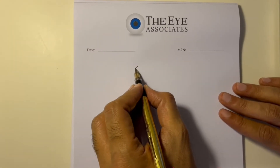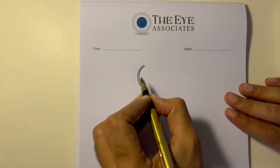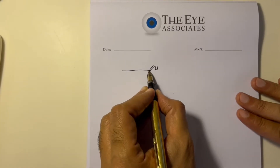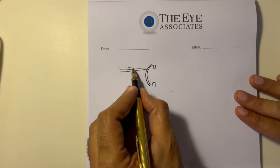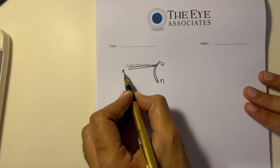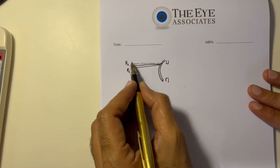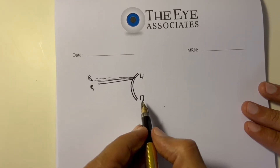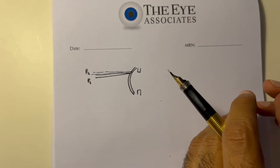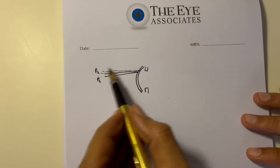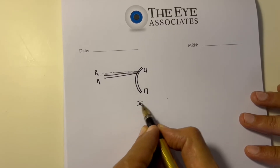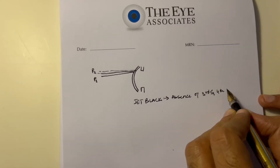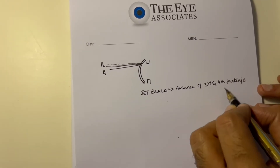In an aphakic patient there is no lens behind the iris, so the only reflecting surfaces are the anterior and posterior surfaces of the cornea. You would only see Purkinje images one and two, which are superimposed, giving just one visible reflection. When you move the light from side to side, you will not see a fourth Purkinje image moving in the opposite direction. This is why it is called a jet black pupil — due to the absence of the third and fourth Purkinje images.